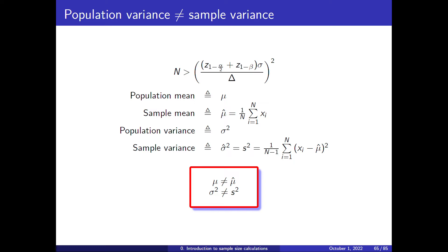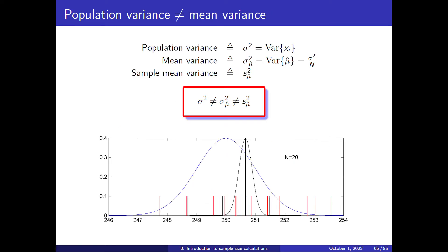The distinction between population and sample parameters is important. The sample mean and sample variance are random variables, while the population mean and population variance are fixed values. Every time you have a random variable, it will have an associated variance. The most important distinction here is between the variance of the tablet and the variance of your estimate of the mean — these are different.